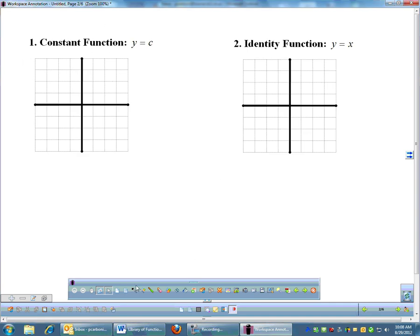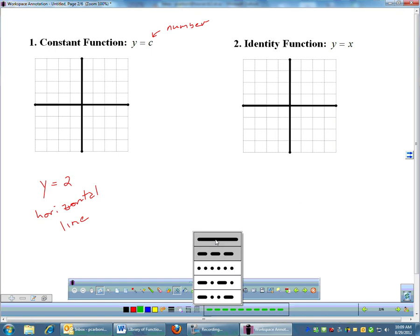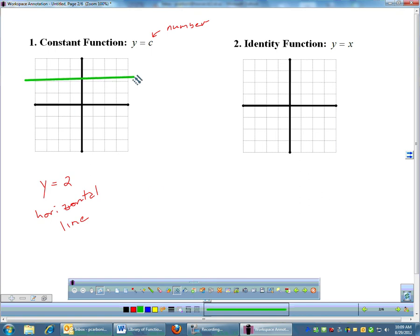The first one is called the constant function, and I said y equals c, but really c is just any number. So this is the same thing as if I were to say, for example, y equals 2. Well, if you have y equals a number, that is a horizontal line. y equals any number is a horizontal line, and it's a horizontal line that just goes through y equals 2. So here's y equals 2, horizontal line, there we go.